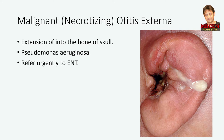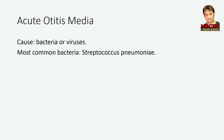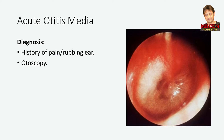Let's move to acute otitis media. Acute otitis media may be caused by viral or bacterial infection. It is more common in children because they acquire viral infections more often than adults and have shorter and more horizontal eustachian tubes. The most common bacteria causing otitis media is Streptococcus pneumoniae. To diagnose acute otitis media in children, pay attention to the history of rubbing ear, in addition to fever. In adults, there is a history of ear pain. By otoscope, you will find a yellow, red or cloudy tympanic membrane, and a bulging tympanic membrane. There may be a fluid level behind the tympanic membrane if there is effusion.